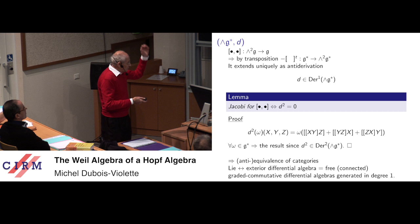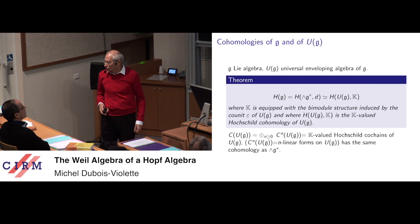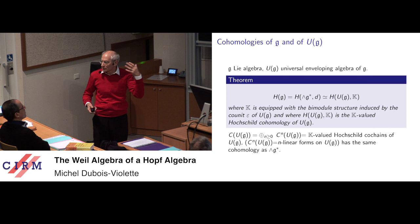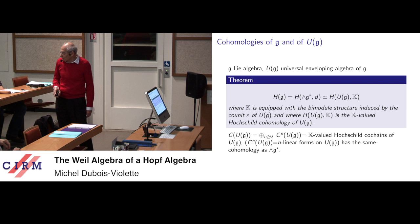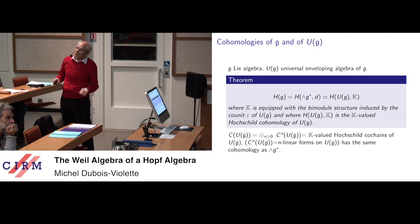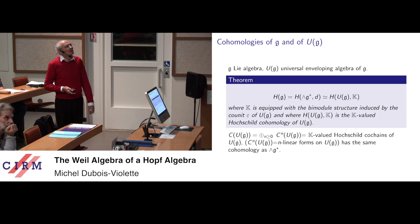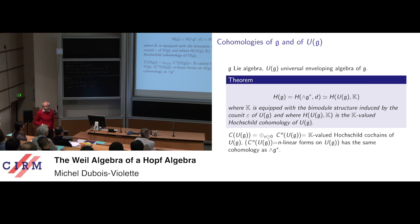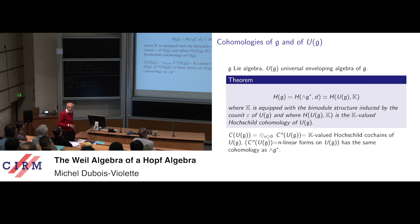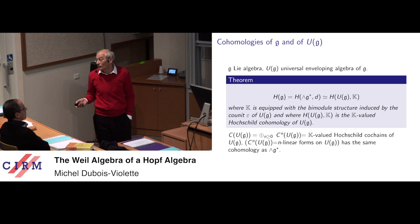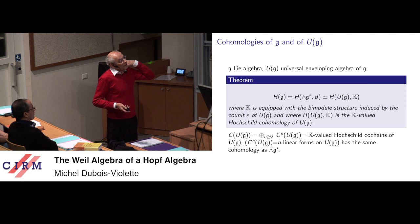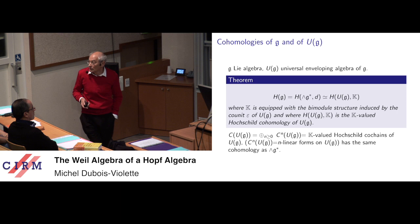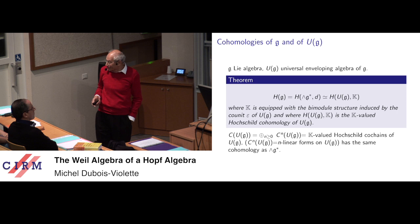So you have an anti-equivalence between the category of Lie algebras and the category of free differential algebras generated in degree one. The cohomology of this is what I call the cohomology of the Lie algebra — cohomology in the trivial module. There is another representation of the same object which we will use, more precisely whose generalization we will use later, which is that it can be computed as the Hochschild cohomology of the universal enveloping algebra of the Lie algebra.